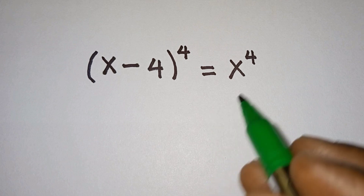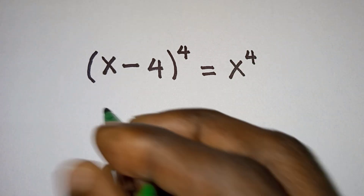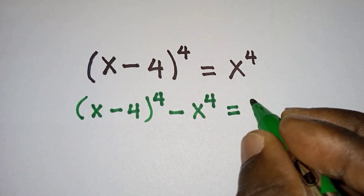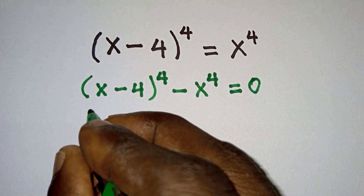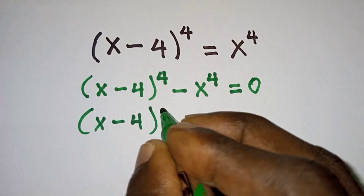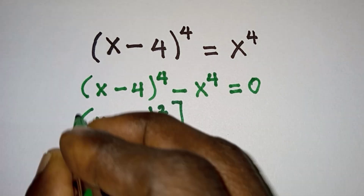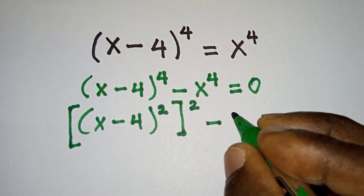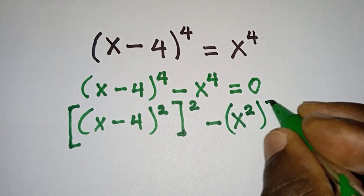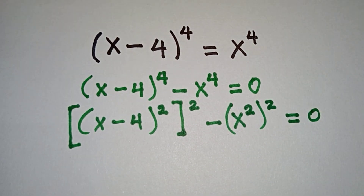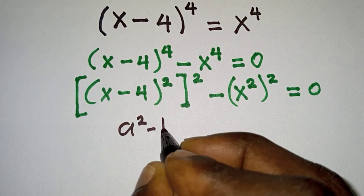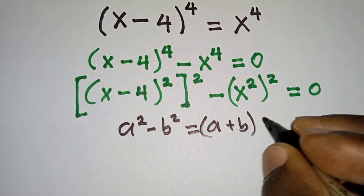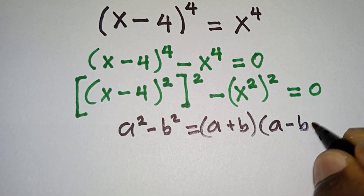Now let's get started. First of all, let's move this one to the left hand side of the equation. Then we can rewrite this as (x minus 4) to the power 2, all to the power 2, minus x to the power 2, to the power 2, is equal to 0. Recall that a squared minus b squared equals a plus b times a minus b.